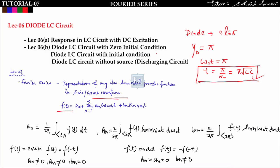Suppose a function f(t) is non-sinusoidal but periodic. Then we can represent f(t) in terms of Fourier series as: f(t) = a_naught + summation from n=1 to infinity of [a_n cos(n·ω₀·t) + b_n sin(n·ω₀·t)], where a_naught, a_n, and b_n are the Fourier coefficients.